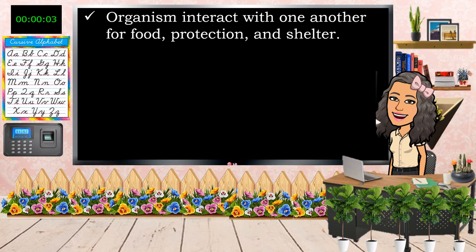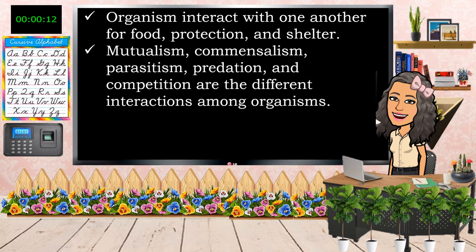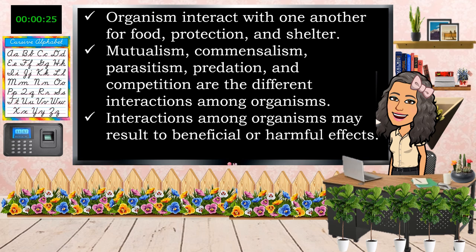Don't forget that organisms interact with one another for food, for protection, and for shelter. The different interactions in this lesson were mutualism, commensalism, parasitism, predation, and competition. Interactions among organisms may result in beneficial or harmful effects. Thank you!